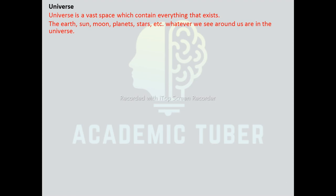The universe is a vast space which contains everything that exists — the Earth, Moon, planets, stars, etc. Whatever we see around us is in the universe. The Sun is one of the stars of our Milky Way galaxy. There are millions of galaxies in the universe like the Milky Way galaxy.